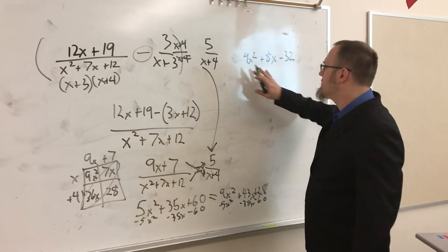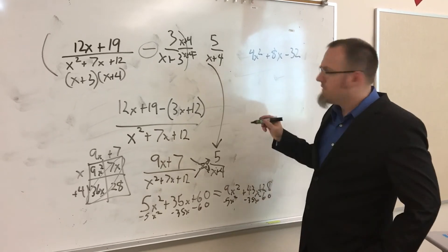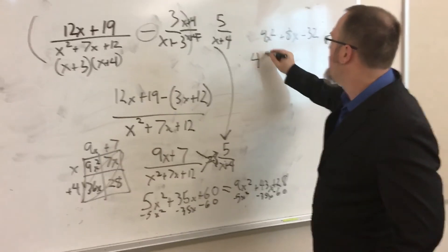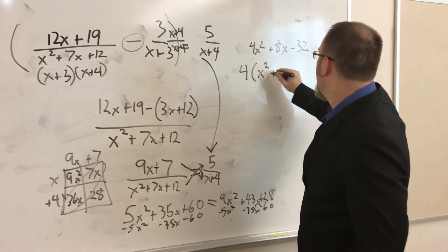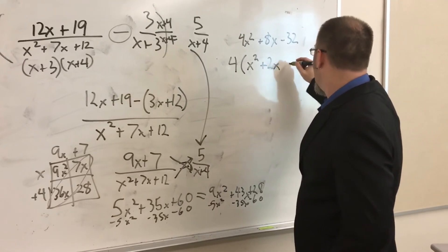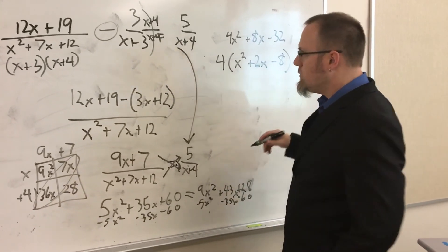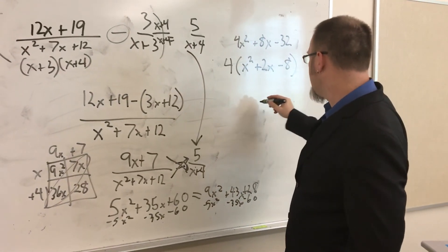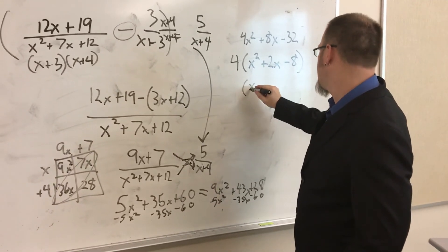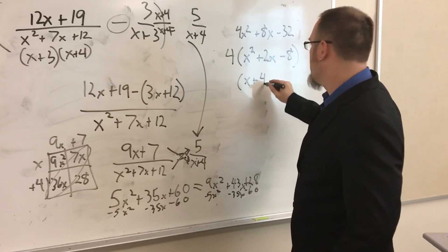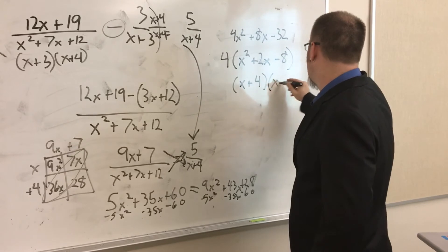Right up here, though, you can see on these, the 4, the 8, and the 32, they're all divisible by 4. So if I factor out a 4, I've got x²+2x-8, which means this is going to factor into an (x+4) and an (x-2).